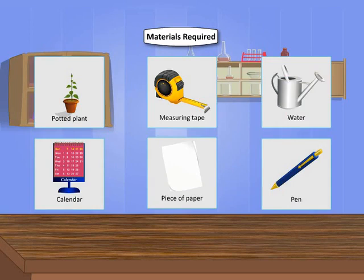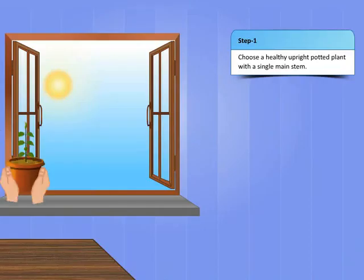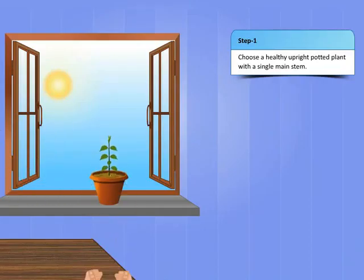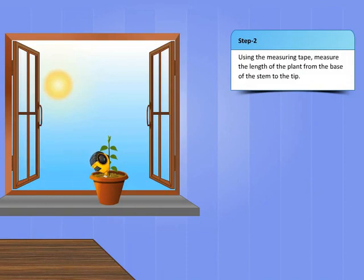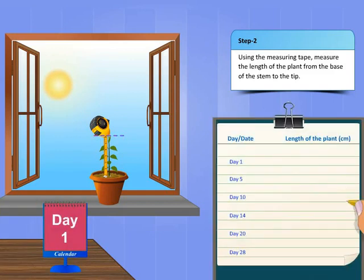Take a healthy potted plant growing upright. Choose only a plant that has a single main stem. Now, using the measuring tape, measure the length of the plant from the base of the stem to the tip, and note down your observation on paper.